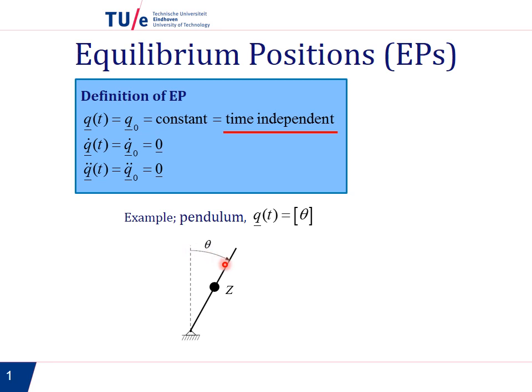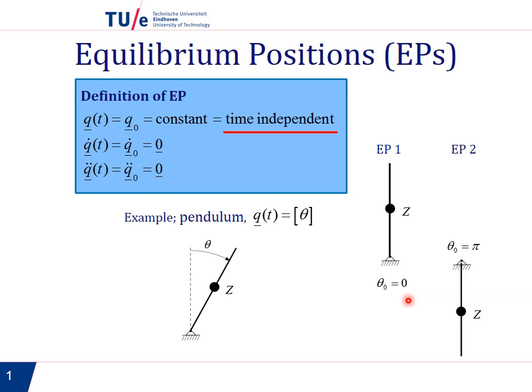If we consider this pendulum with generalized coordinate theta and center of mass z, it has two equilibrium positions in the region smaller than 2π. The first equilibrium position is theta equals 0, and the second equilibrium position is theta equals π. In this case it is rather simple to see this directly, but in general we will need an equation to be able to find the equilibrium positions of a mechanical system.